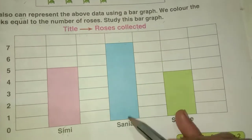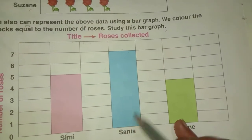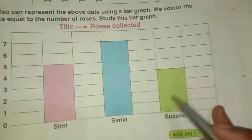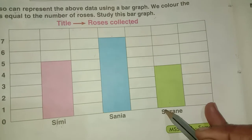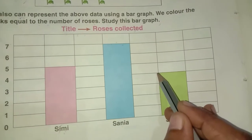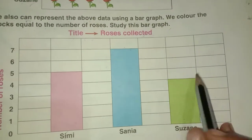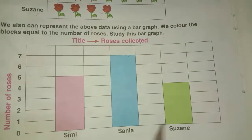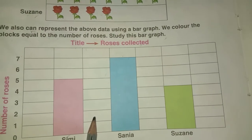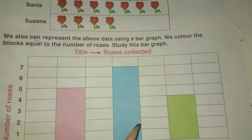Simi collected five roses, so five blocks are colored. Sanya collected seven roses, so seven blocks are colored. Suzanne collected four roses, so four blocks are colored. This is called the bar graph.